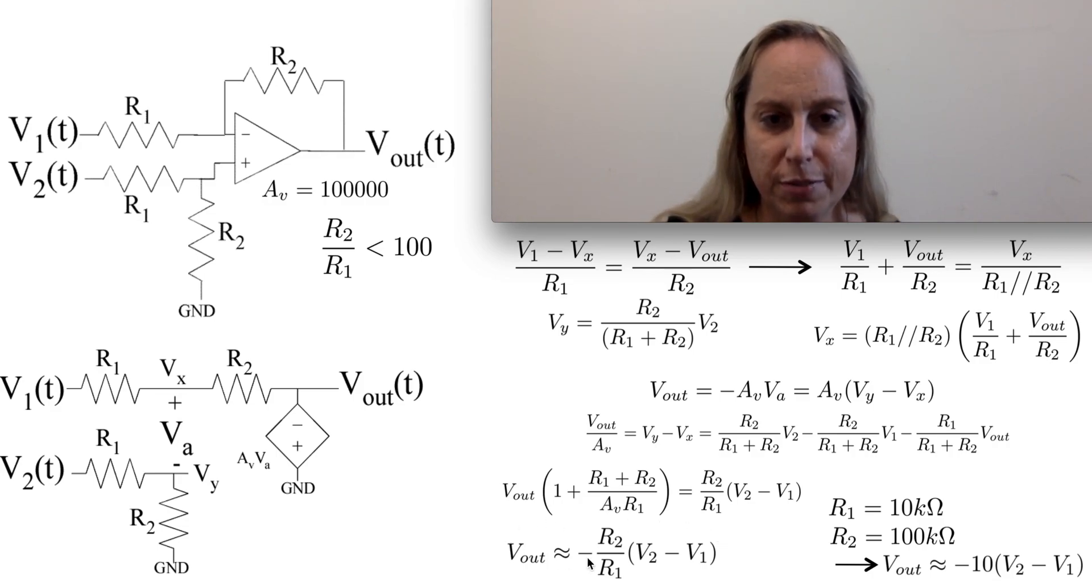it's pretty much going to just be approximately R2 over R1, V2 minus V1, which is your ideal response.